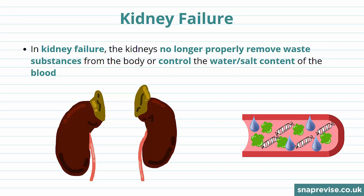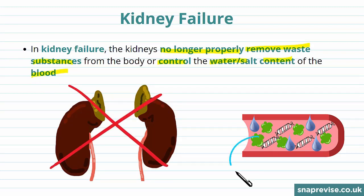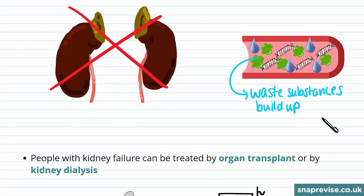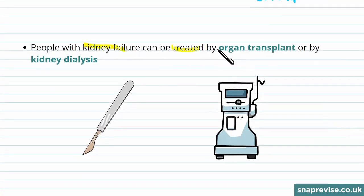In other videos we talk about how important the kidney is in regulating blood water levels. What happens in kidney failure is that the kidneys can no longer properly remove waste substances from the body or control the water and salt content of the blood. So when the kidneys don't work, waste substances can build up in the blood. People with kidney failure can be treated by organ transplant or by kidney dialysis.